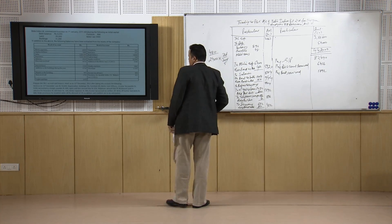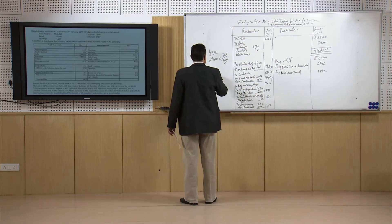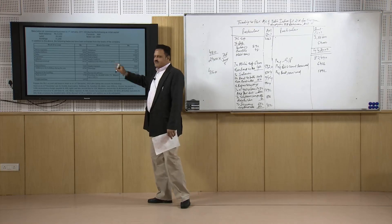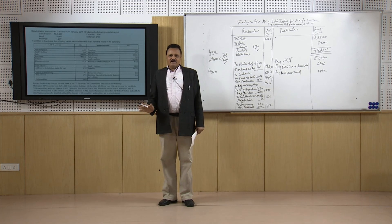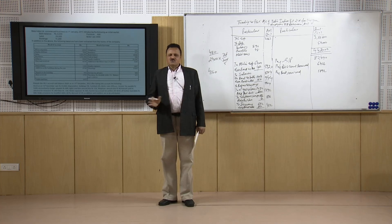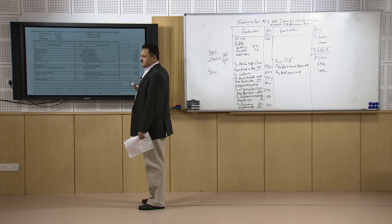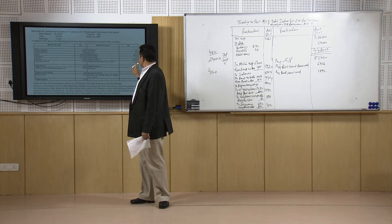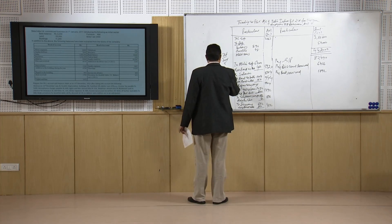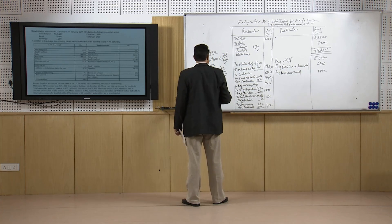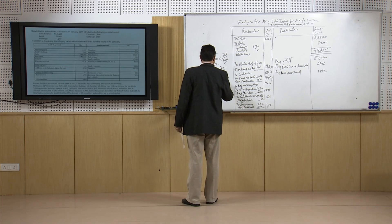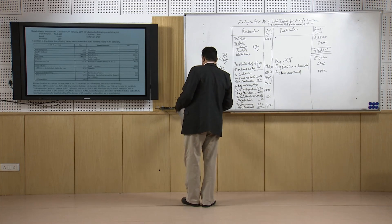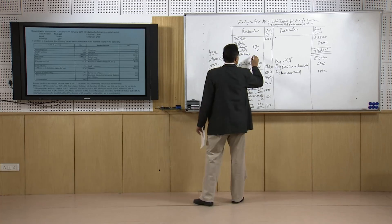The addition to motor van was 4,160 rupees, but this addition was made on 1st April 2011, meaning there was no addition in the first three months. So this part of the motor van has been used only for 9 months. You charge depreciation on the opening 2,400 for the full year and on the 4,160 addition only for 9 months. 4,160 × 20% = 832 rupees, then converted to 9 months gives 624 rupees. Total depreciation for the motor van works out as 1,104 rupees.